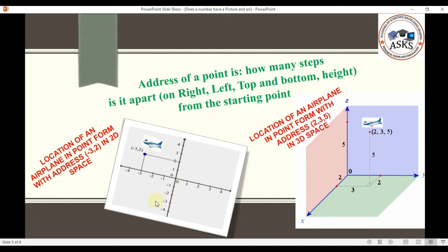2D space, considered in the air. And this is a three-dimensional space. In this space, we have an airplane. We are going to talk about its address in the form of point in 2D space, and then we are going to talk about its address in the form of point in 3D space. If we consider each step in the form of miles, and this is our starting point in 2D space or a 2D plane.